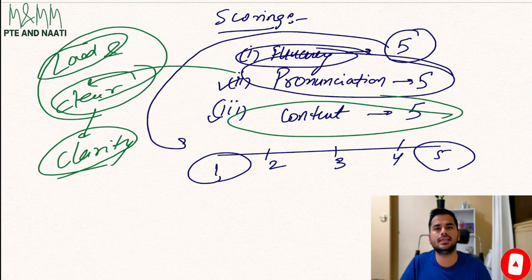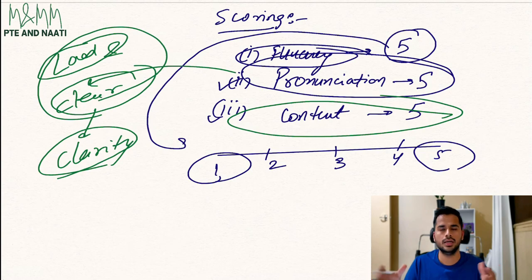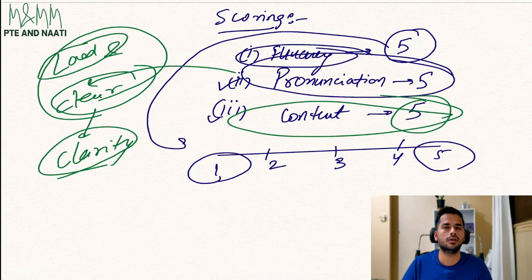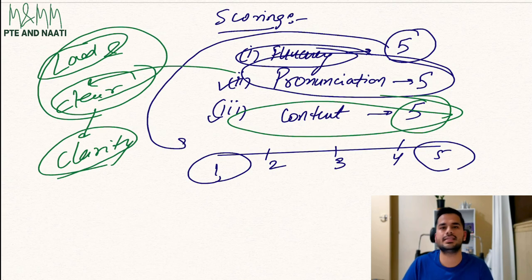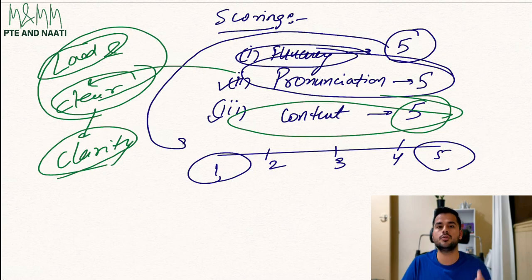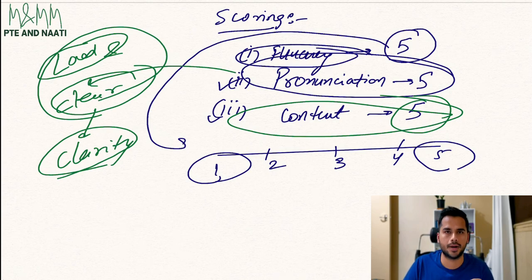Last but not the least is content. Content refers to whatever is given in front of you in the paragraph. In order to get a full score in content, you cannot add any new words, you cannot skip any words given in the paragraph, and you need to make sure you are not flipping the sequence of words. Maintain the sequence, clarity, and accuracy of the words. If all these things are met, you will get a perfect score in your content part.